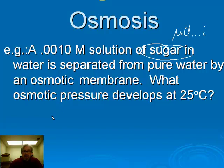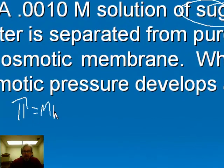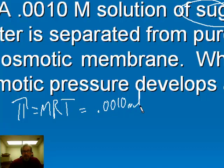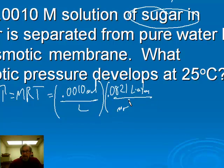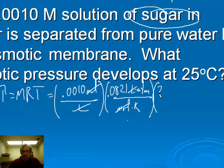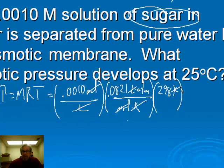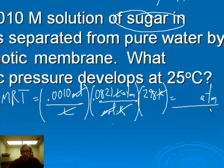Pi equals M times R times T. The concentration is 0.0010 moles per liter. We multiply by R — we use 0.0821 liter·atmospheres per mole·kelvin so we can cancel liters and moles. Then we multiply by the temperature: 25 degrees C is 298 kelvins, canceling kelvins. The remaining unit is atmospheres, so osmotic pressure is measured in atmospheres. The result is 0.024 atmospheres.